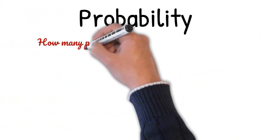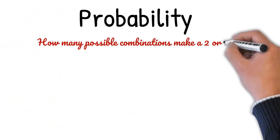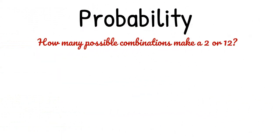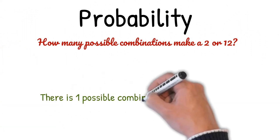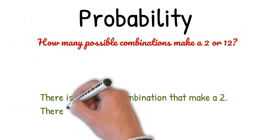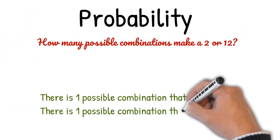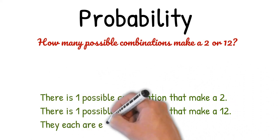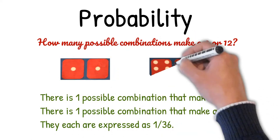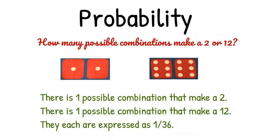How many possible combinations make a two or twelve? There is one possible combination that makes a two and one that makes a twelve, each expressed as one out of thirty-six. The possible combination for two is only one-one. Likewise, the only possible combination for twelve is six-six.